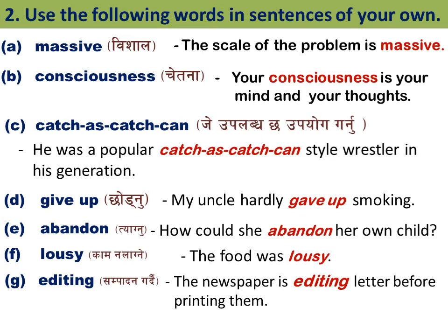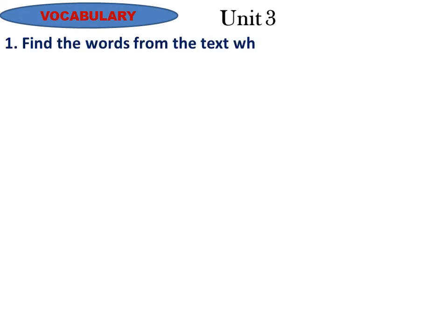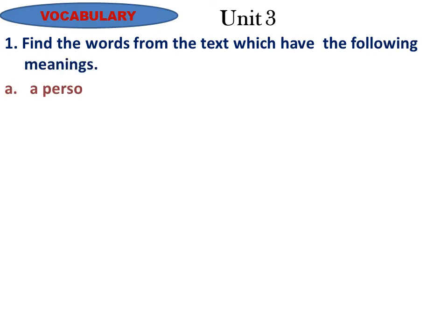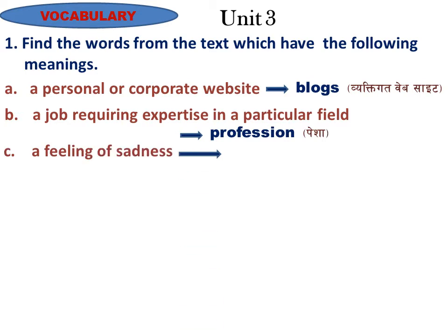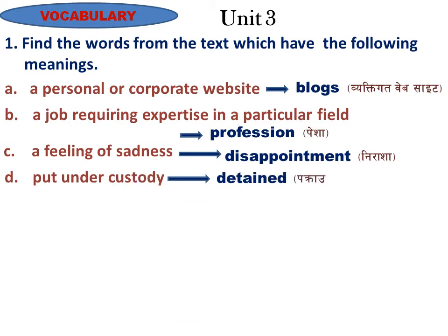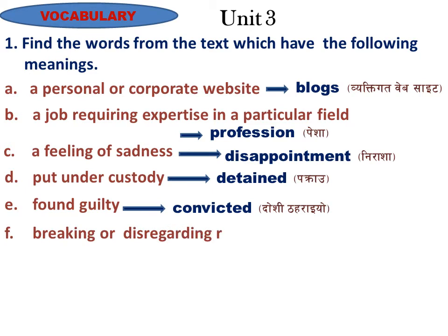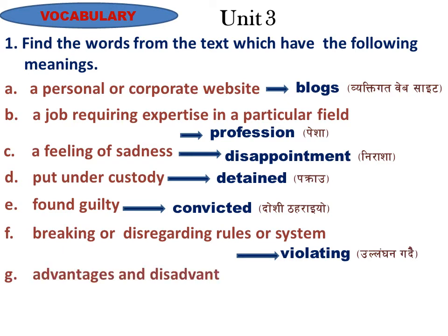Question Three: Find the words from the text which have the following meanings. A: A personal or corporate website — 'blog' (vyaktigat website). B: A job requiring expertise in a particular field — 'profession' (pesa). C: A feeling of sadness — 'disappointment' (nirasha). D: Put under custody — 'detained' (pakraw). E: Found guilty — 'convicted' (doshi thahariyo). F: Breaking or disregarding rules or a system — 'violating' (ullanghan gardai). G: Advantages and disadvantages — 'pros and cons' (fayda ra be-fayda).